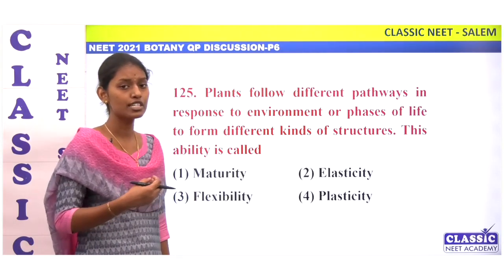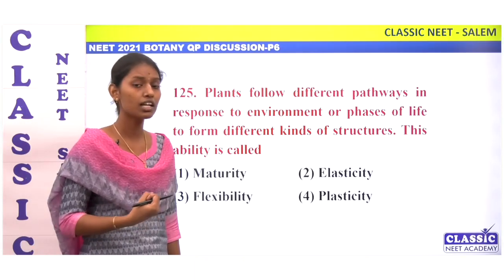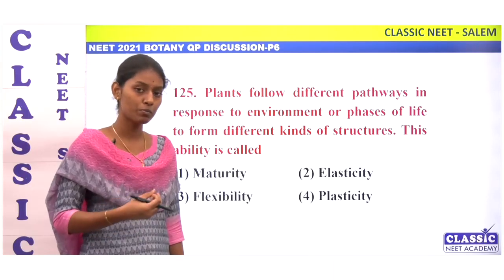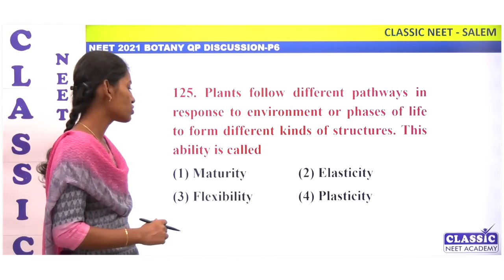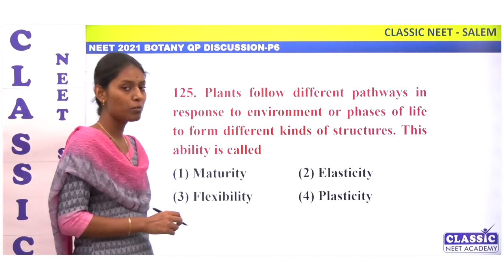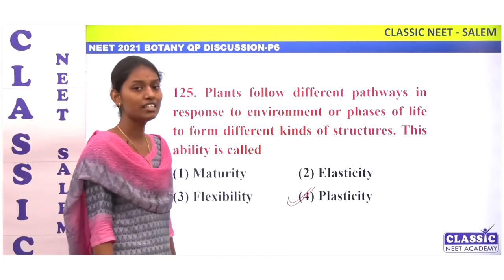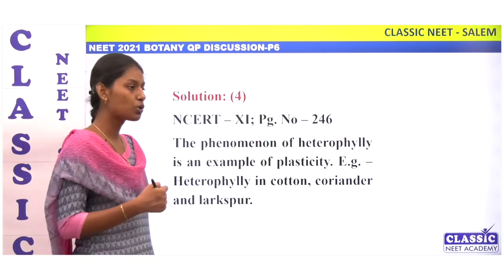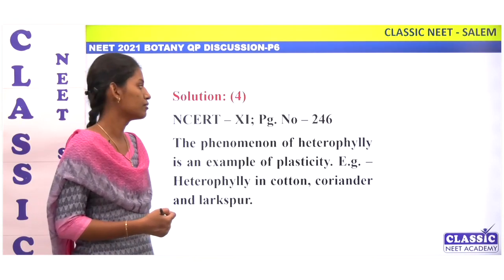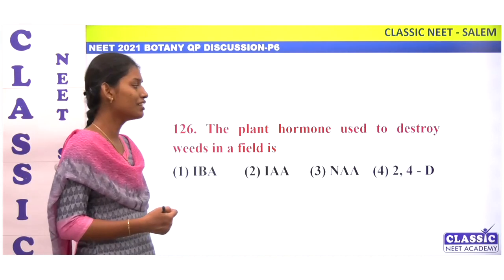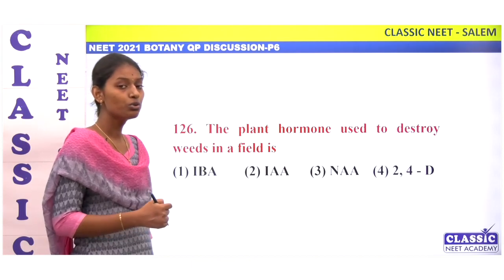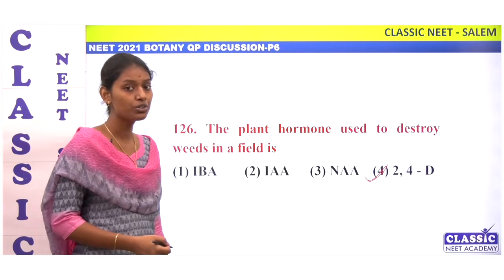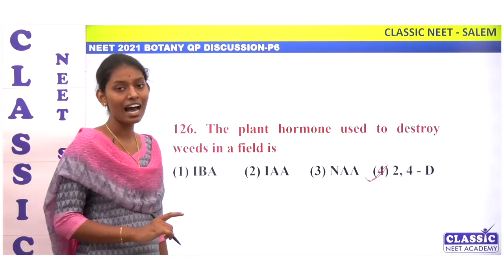The ability of an organism to respond to environmental changes in different phases of life is called plasticity. Heterophylly in cotton — two different types of leaves are produced — is a good example of plasticity. Coriander and larkspur are also examples of plasticity. The plant hormone used to destroy weeds in a field is 2,4-D, a synthetic auxin. Option 4.